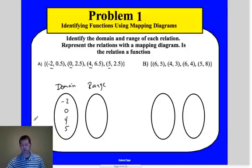Now, the next thing you're going to do is go to your range, which again, range is your y values. Okay, so we're going to write 0.5, 2.5, oh we got a little crazy there, and 6.5. And what you'll notice is that, again, we had a duplicate on our 2.5. There's two of them. So we only have to write it once.